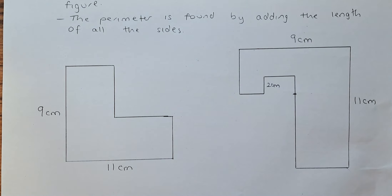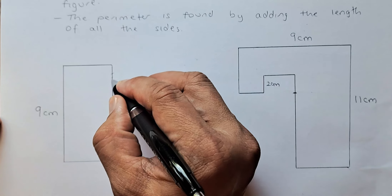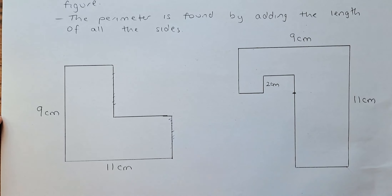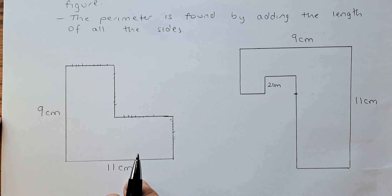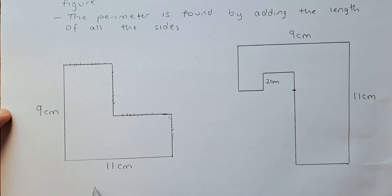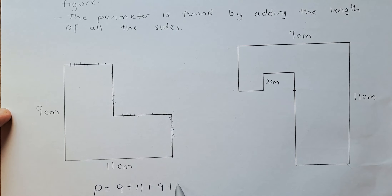The trick is this: this length and this length will add up to nine — so this pair of lengths equals nine. Likewise, this length and this length is also going to be nine. And then this length and this length is going to add up to 11. So in this shape it's going to be nine plus 11 plus nine plus 11. The perimeter is nine plus 11 plus nine plus 11, which is 20 plus 20 — giving 40 centimetres.